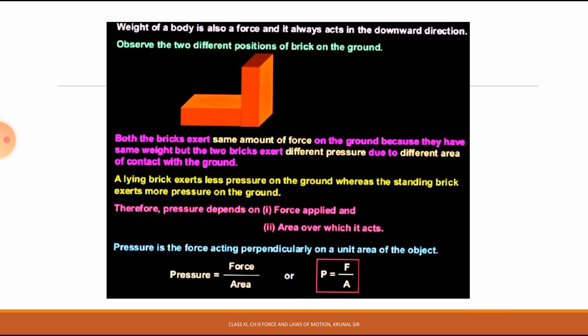Weight of a body is also a force, and it always acts in the downward direction. Observe the two different positions of bricks on the ground. Both bricks exert the same amount of force on the ground because they have the same weight, but the two bricks exert different pressure due to the different area of contact with the ground.